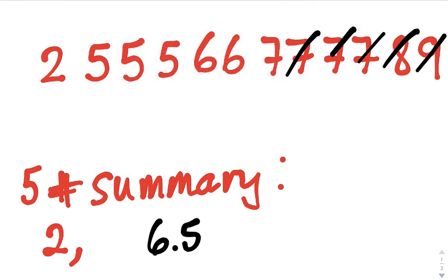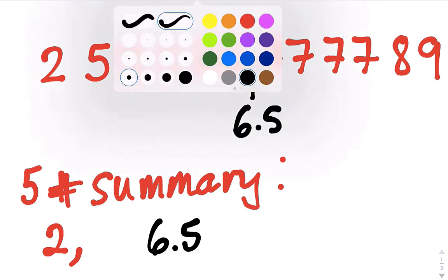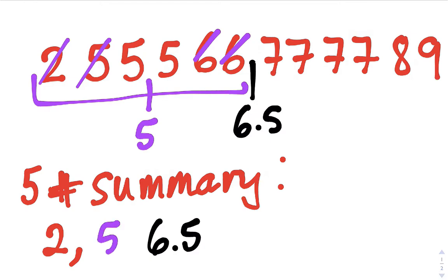We're going to find Q1 and Q3, the first and third quartile. To find Q1, it's the middle of the first half of data. So you look at everything below the median — you don't include it. We're going to find the middle by crossing off, and again there are two in the middle. The middle of five and five is five. So Q1 is five.